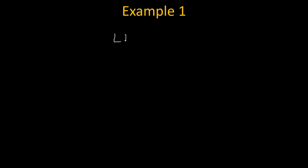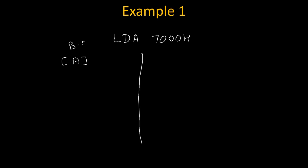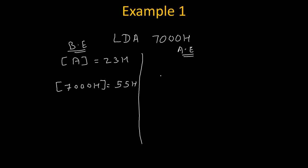Let's take an example: LDA 7000H. We check the content before execution — suppose the accumulator was 23H and the content of address 7000H was 55H. After execution, the content of 7000H will get loaded into the accumulator, so the accumulator will become 55H. The content of address 7000H will remain unchanged at 55H.